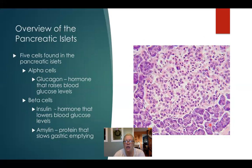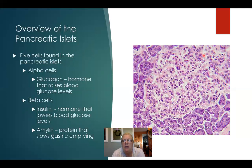Here we have a histological image of the pancreas. The cells on the outside are stained much darker and are clustered more closely together — these are the acinar cells with exocrine function. In the middle, there is a lighter-stained section where the cells are not as closely packed — that's a pancreatic islet. If you looked at all the pancreatic tissue, the exocrine acinar cells would greatly outnumber the volume taken up by the pancreatic islets.